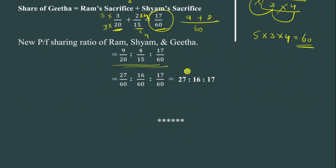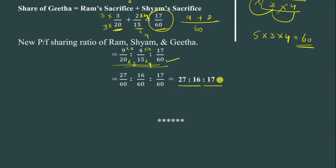Since all denominators are different, we convert to a common denominator of 60. Ram: 9/20 × 3/3 = 27/60. Sham: 4/15 × 4/4 = 16/60. Gita: 17/60. The new profit sharing ratio of Ram, Sham, and Gita is 27:16:17. If you like this video, hit like and share with your friends. See you in the next video!